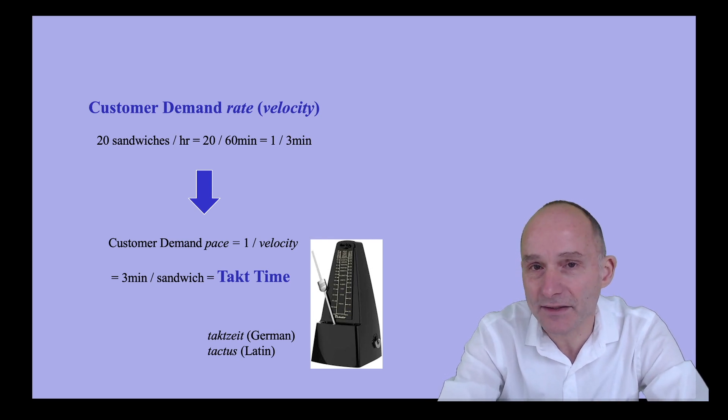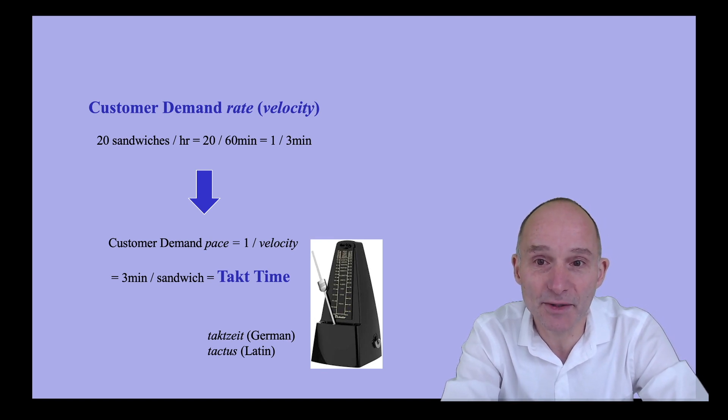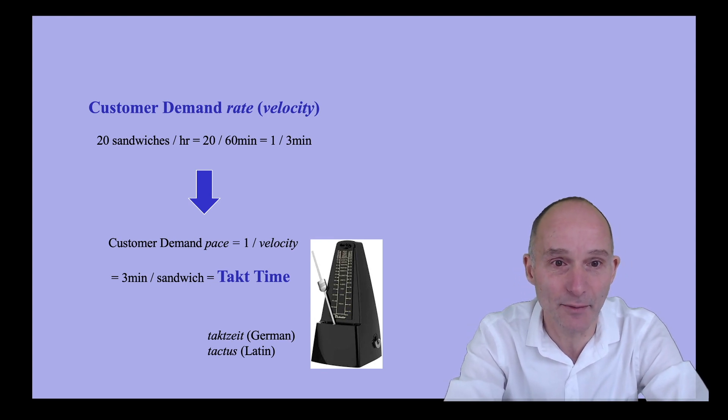So takt time is the pace, just like runners describe their velocity as an 8-minute mile or 5-minute kilometer, which is the reciprocal of 12 kilometers per hour or 7.5 miles per hour.